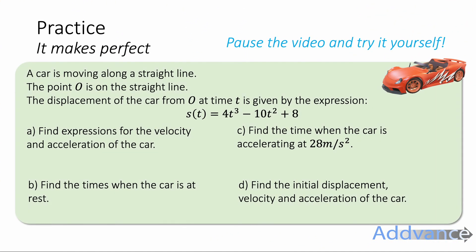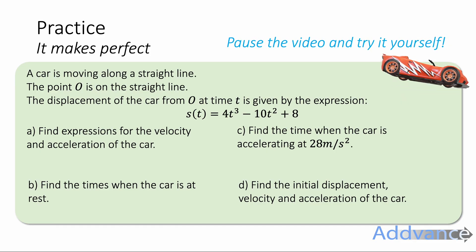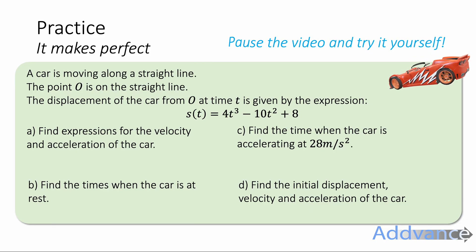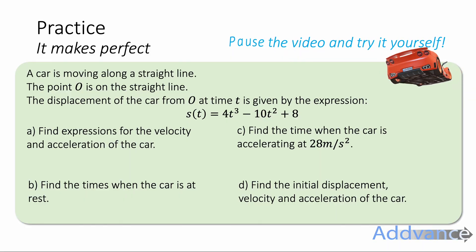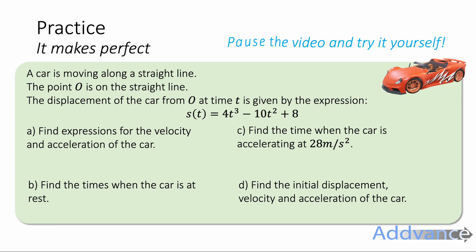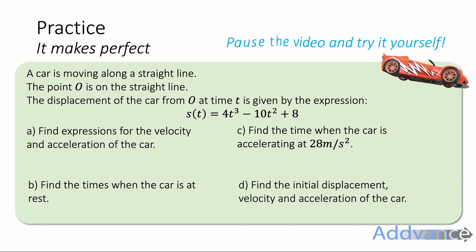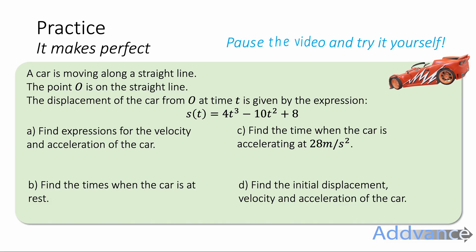That's everything from today's video. Here are some practice questions. A car is moving in a straight line. Point O is on the straight line. The displacement of the car from O at time t is given by s(t) = 4t³ − 10t² + 8. Find expressions for the velocity and acceleration, the times when the car is at rest, the time when the car is accelerating at 28 m/s², and the initial displacement, velocity and acceleration. Pause the video and try this yourself — it may take 10 to 15 minutes.